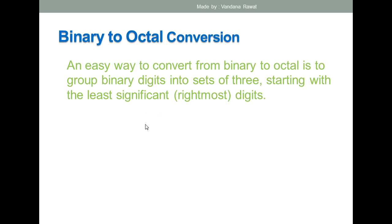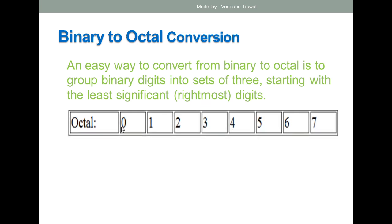This is basically a shortcut trick. An easy way to convert from binary to octal is to group the binary digits into sets of three. The important thing is that you must make groups of three, and you always start making the groups from the LSB digit — the rightmost digit.